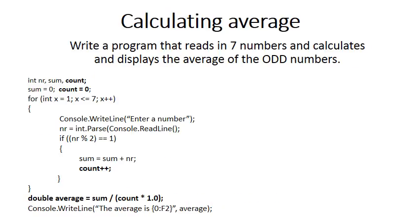Because we're only calculating the average of the odd numbers, you should realize that it would not make sense to say average is sum divided by seven. Somehow we need to count how many odd numbers are received during the reading in the seven. So we need to introduce a third variable called count.